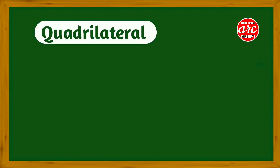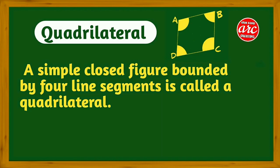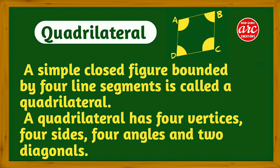What is a quadrilateral? A simple closed figure bounded by four line segments is called a quadrilateral. A quadrilateral has four vertices, four sides, four angles, and two diagonals.